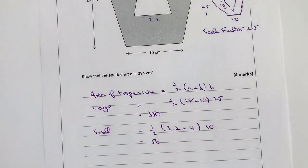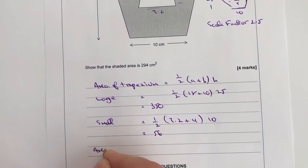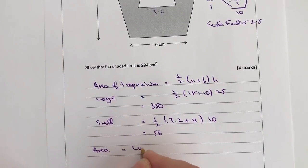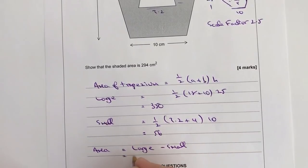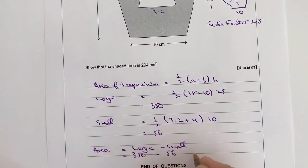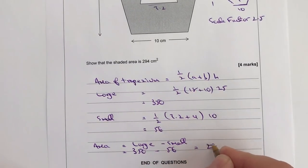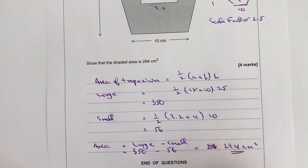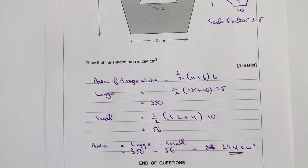So to work out the area then of the shaded shape, the area is going to be large minus small, and that's going to be 350 minus 56, which equals 294 centimeters squared, which is what they've asked us to show.